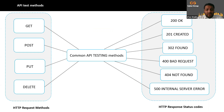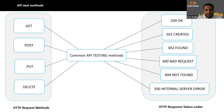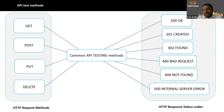People ask how to test an API when there's no UI. API testing is done through request methods. For a QA tester, the request methods include GET, POST, PUT, and DELETE — those are four main ones, but there are more. The responses you get once you run those requests are on the right side, and those responses are what you will compare with your expected and actual results. QA testers use these API test methods to do API testing.